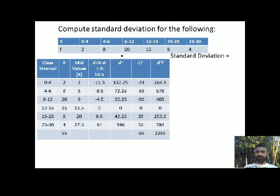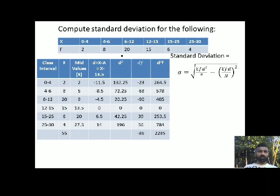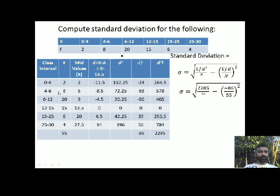Let me again write the formula: sigma is equal to the square root of Fd squared by N, minus Fd by N, whole square. For class intervals, we do not use x values directly — we use the mid values. The mid values are: 0 to 4 gives 2; 4 to 6 gives 5; 6 to 12 gives 9; 12 to 15 gives 13.5; 15 to 25 gives 20; and 25 to 30 gives 27.5.